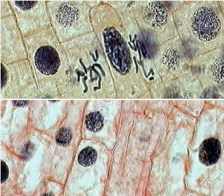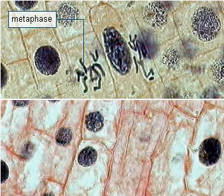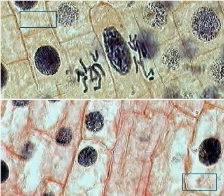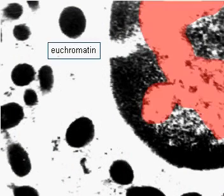The condensed structure of metaphase chromosomes becomes much looser during interphase, which is the phase between cell divisions. In their loosest state, chromosomes take the form of long chromatin fibers called euchromatin.